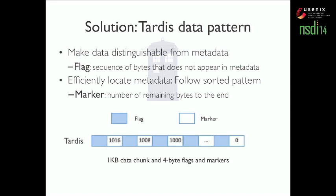To locate metadata inside data, we first need to ensure the data is distinguishable from metadata. To achieve that, we introduce a specific sequence of bytes called a flag that does not appear in metadata. Then, as we learned in algorithms class, it is usually easy to locate something in a sorted array using binary search, so we design our TARDIS pattern to follow a sorted pattern.